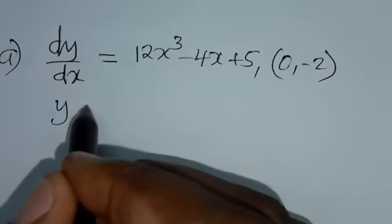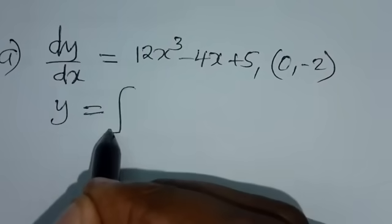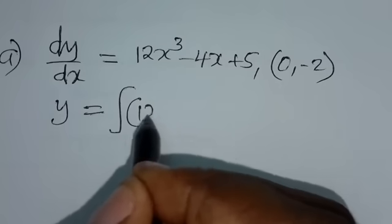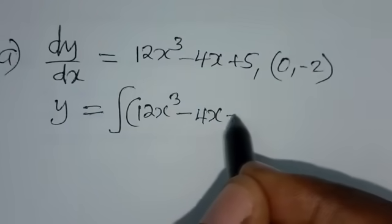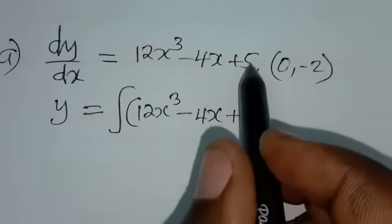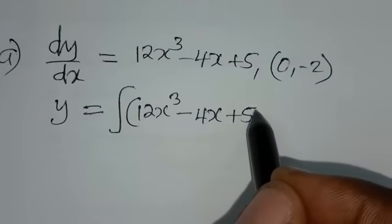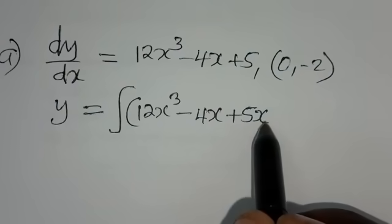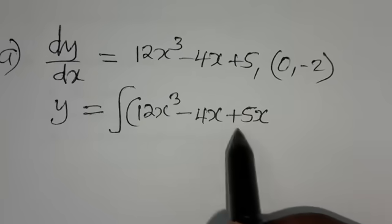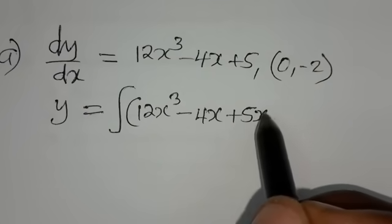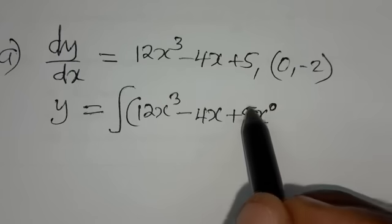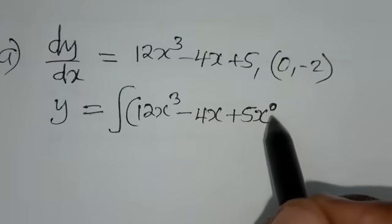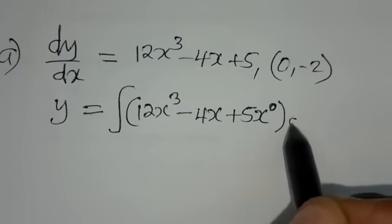So we are going to say y is equal to the integral of 12x cubed minus 4x plus 5. The 5 is a constant, but it can be written as 5x to the power 0, since any number to the power 0 is 1, so 1 times 5 gives us back the 5.